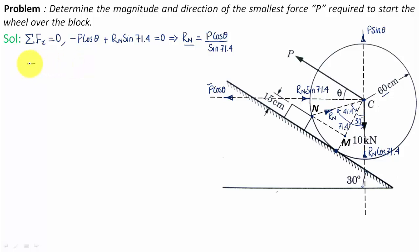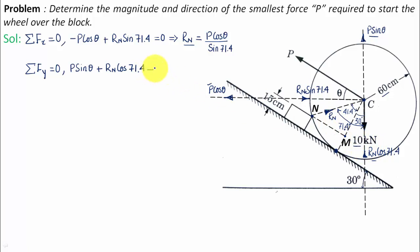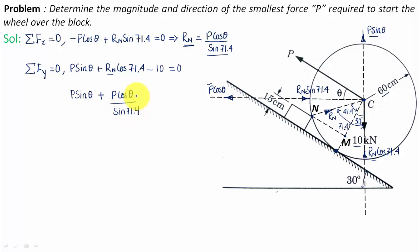Now applying ΣFy = 0: P sinθ plus R_N cos71.4 minus 10 kilonewtons equals zero. Substituting R_N = P cosθ / sin71.4 into this equation, the entire expression turns out in terms of P. Shifting the minus 10, it becomes equal to 10.